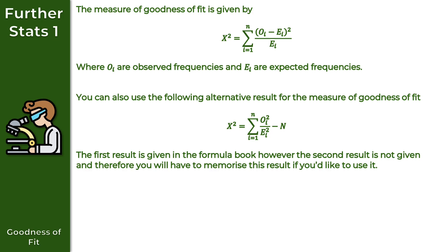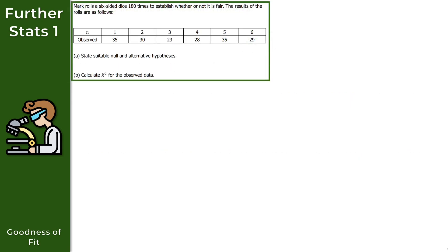That's a quick introduction to goodness of fit. However, goodness of fit is very much an introductory topic to the wider subject of chi-squared tests. We're going to take a look at one practice question for goodness of fit. Mark rolls a six-sided dice 180 times to establish whether or not the dice is fair. The results are shown in the table below, where n is the face the dice lands on — one through six — and the observed values show how many times each face appears, for example 35 ones, 32 twos, and so on.